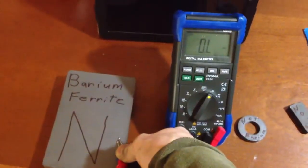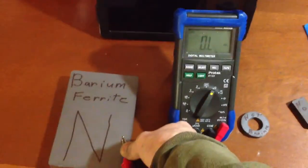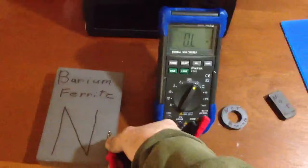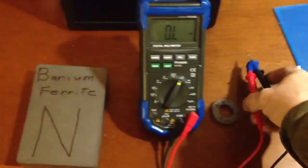And Floyd Sweet said the barium ferrite is the only magnet that will work in the VTA. So anybody trying to replicate the VTA will need these magnets. Strontium he said will not work. They may work for other things, but not in the VTA.